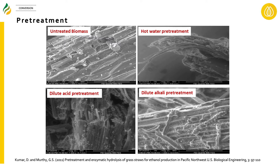Scanning electron micrographs show untreated biomass and three different pretreated biomass samples. You can see morphological changes in structure: for dilute acid, the fibril structure has separated, opened up, and there's some breakage. The changes are not so drastic for hot water and dilute alkali, but you can see the lignin gets redistributed as droplets.